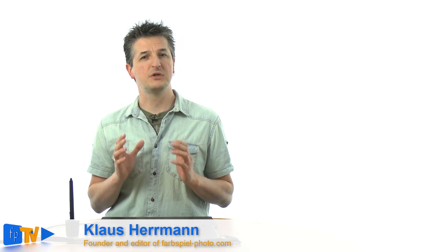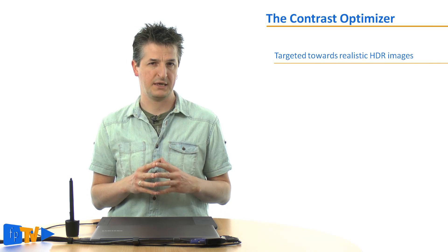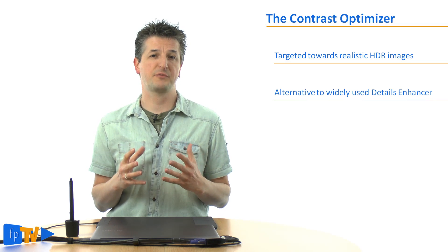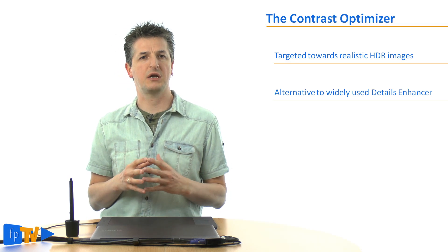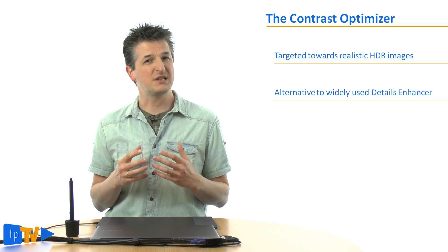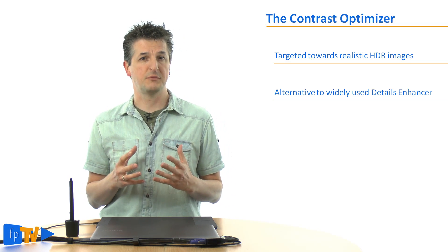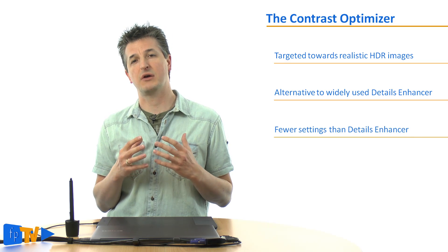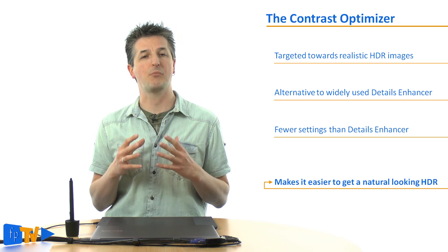In the last video I've shown you what the new features of Photomatix Pro 5 are, and probably the most important one is the Contrast Optimizer. It's a new tone mapping method tailored to produce more realistic results than the well-known Details Enhancer. The Details Enhancer is what probably 95% of all photographers are using, and it produces this distinct HDR look. But the results can be very extreme and unnatural if you're not careful.